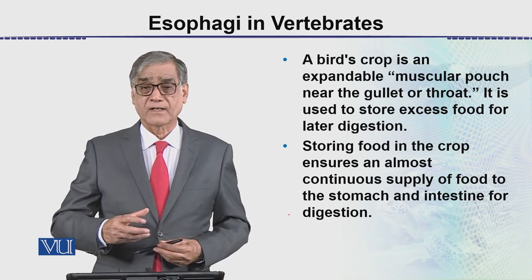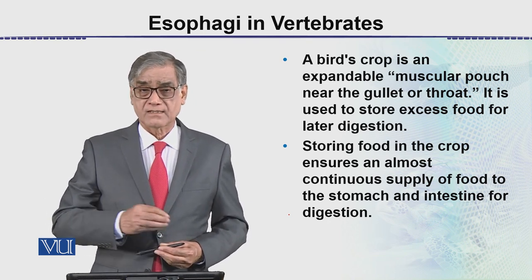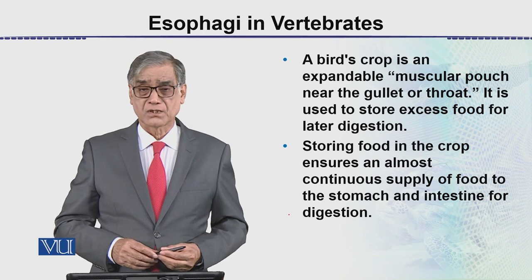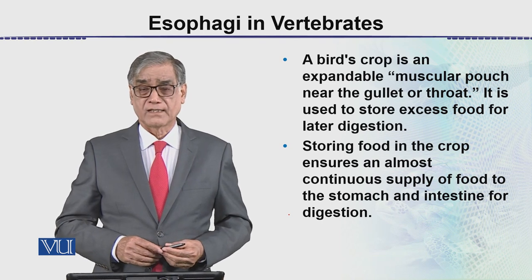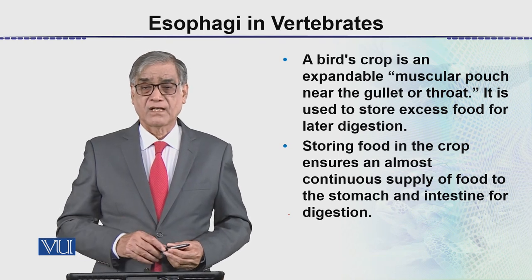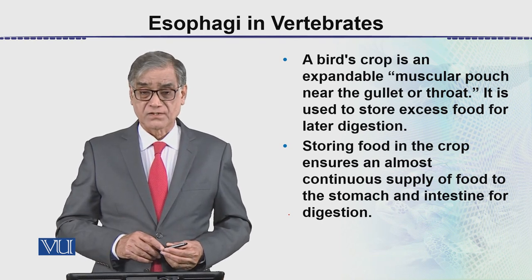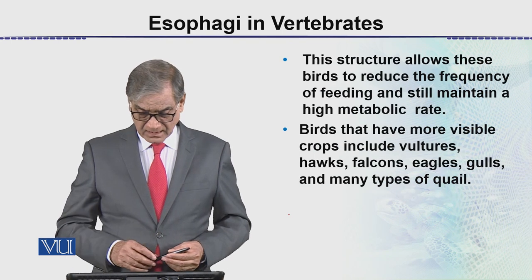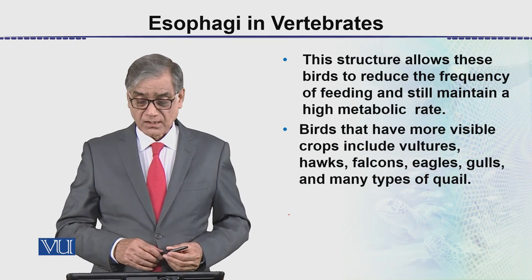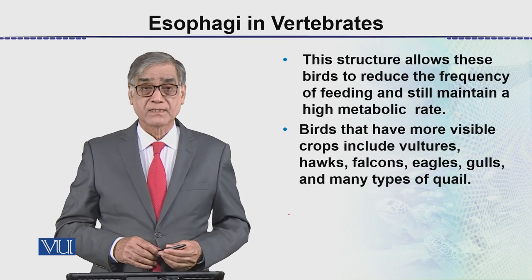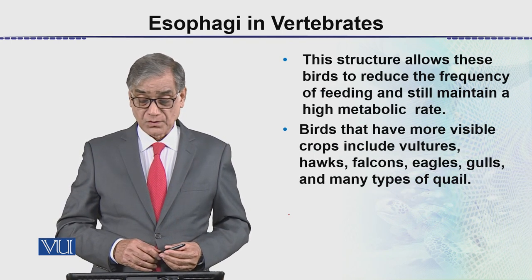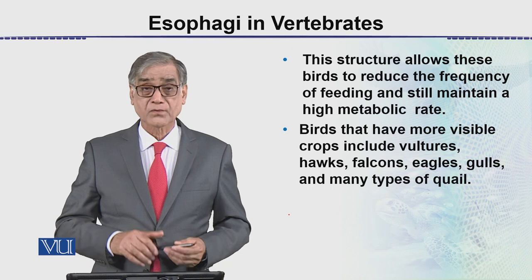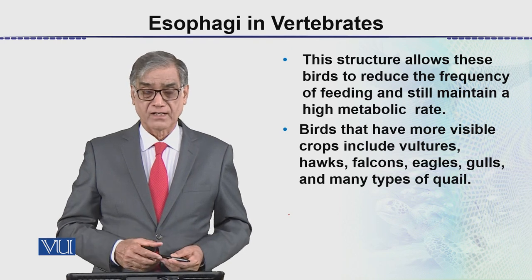The stored food starts moving into the next part of the digestive system. This structure allows these birds to reduce the frequency of feeding.